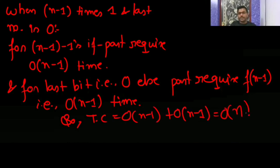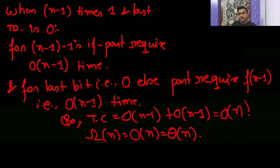So you have seen that both omega is Θ(n) and big-O is Θ(n), so the overall time complexity is Θ(n). Option C is the correct answer.